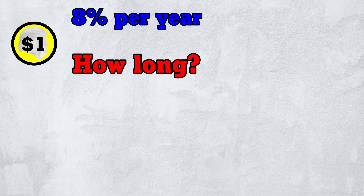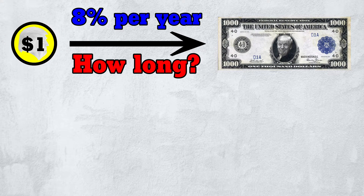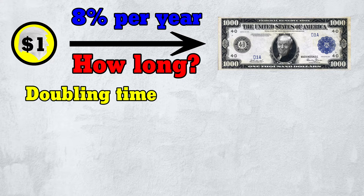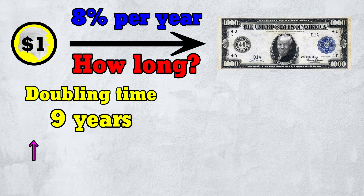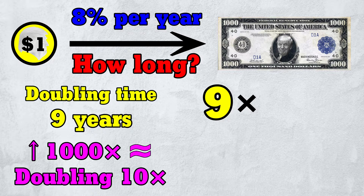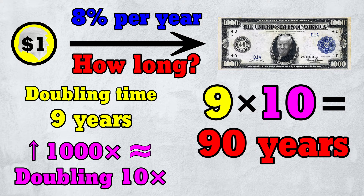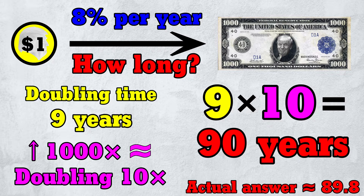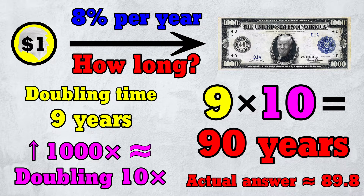Let's now put our two tricks to use. At an interest rate of 8% per year, how long will it take for $1 to grow to $1,000? Trick 1: the rule of 72 says the doubling time is roughly 9 years. Trick 2 says growing a thousand-fold is roughly the same as doubling 10 times. Altogether, it'll take roughly 9 times 10, or 90 years. This rough answer is remarkably close to the actual answer.